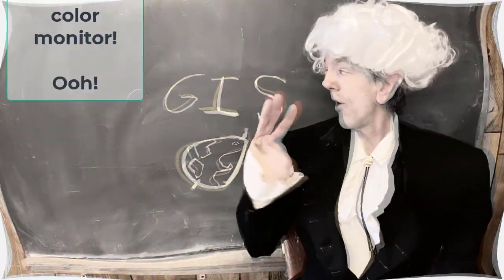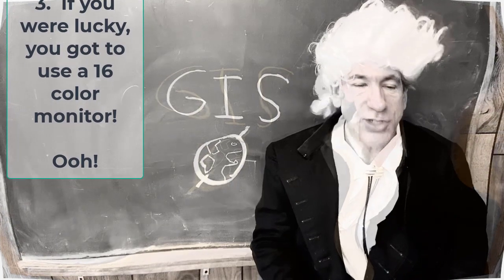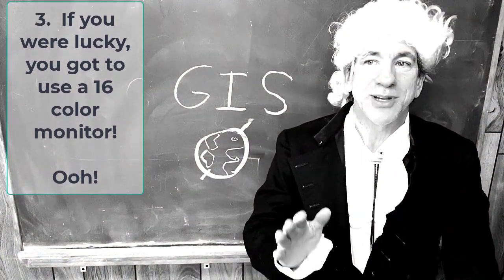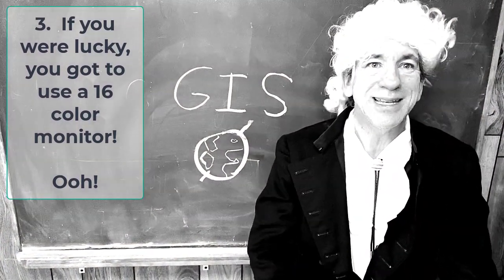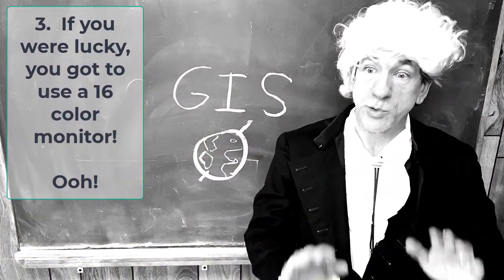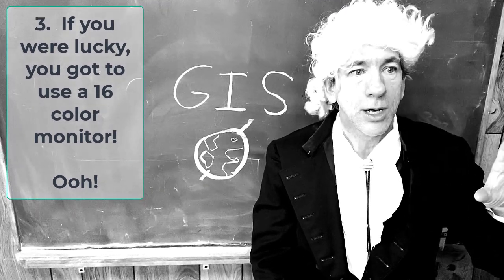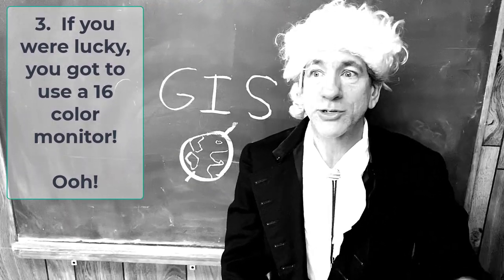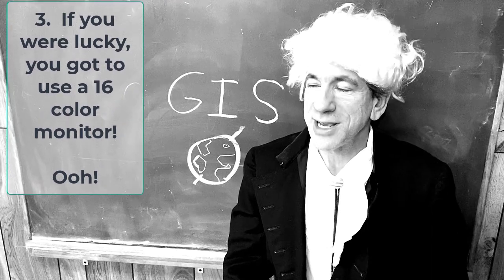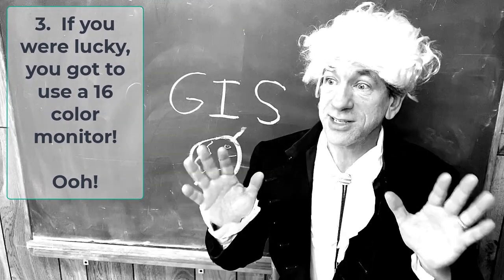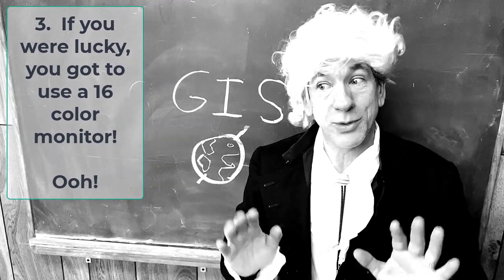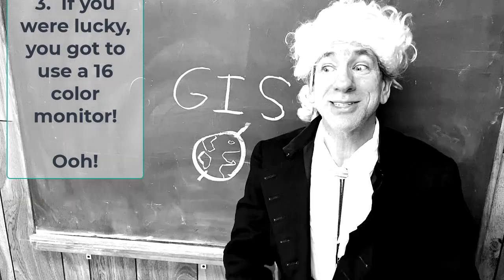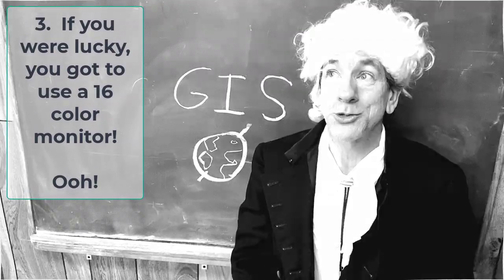Number three: in the early days of GIS, you had a 16-color monitor, which was a huge leap forward from the single-color monitors in some workstations. You had 16 colors if you were really lucky, and that was pretty cool because you could make 16-color maps.